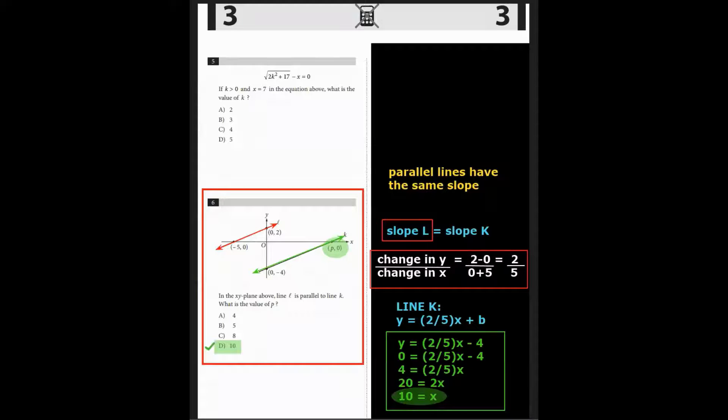That gives us the equation y equals 2 fifths x minus 4. We're going to plug in the point with the y value 0 there in the green bubble. And so 0 equals 2 fifths x minus 4. Add 4 to both sides. Multiply both sides by 5. We get 20 equals 2x, divide by 2, and x equals 10. The value of p is 10, and the correct answer is d, 10.